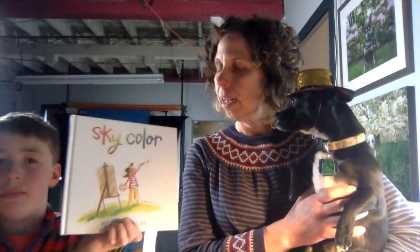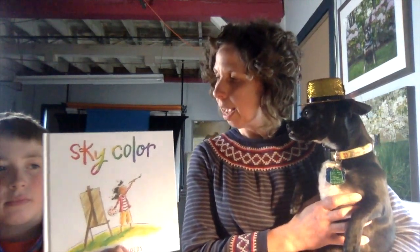Sky Color. And in Sky Color, if you remember, Marisol needed to paint a class mural and she wanted to paint the sky. And what color didn't she have, Isaac? Blue. She didn't have the color blue. And she was wondering, well, how am I going to paint a sky without the color blue?